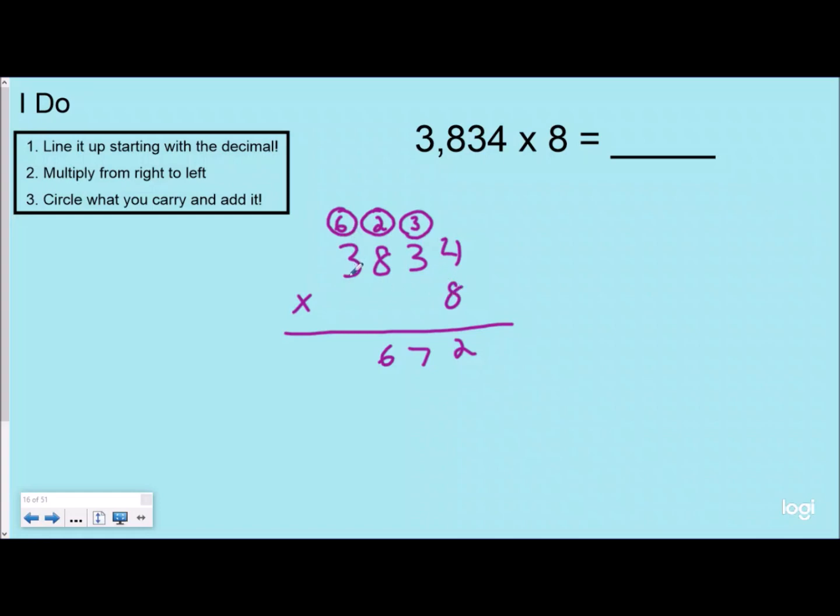And then 8 times 3 is 24 plus 6 is 30, and we get the same answer of 30,672. So you can see it's a lot faster when you do the standard algorithm, but you don't really understand the place values when you do it this way, so we always want to take our time to remember that.